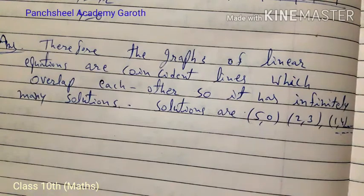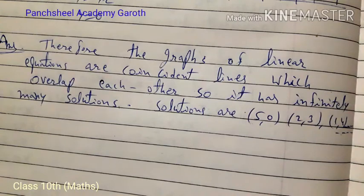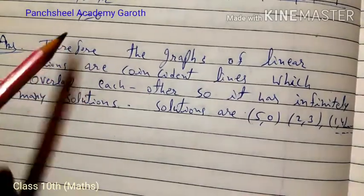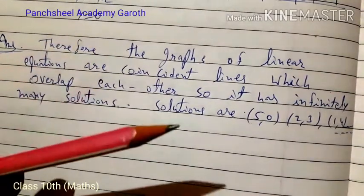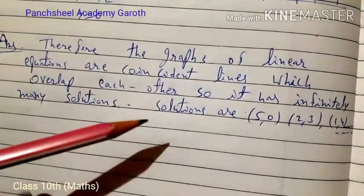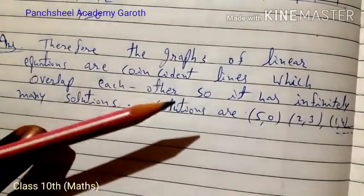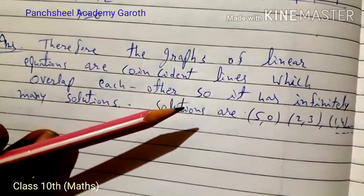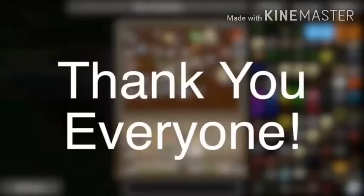Therefore, the graph of the linear equations are coincident lines which overlap each other, and they have infinitely many solutions. So the system is consistent. For the remaining sub-questions: question 3 is consistent with a unique solution (intersecting lines) and question 4 is inconsistent with no solution (parallel lines).